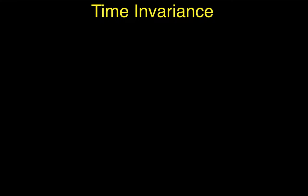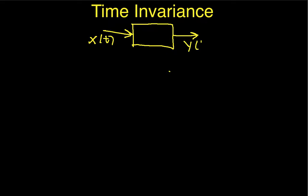Suppose I have a system with an input and an output. All this system does is multiply its input by two to get its output — it's just a constant gain, and we're going to assume that this gain is indeed constant and never changes. We're going to do a thought experiment where we put a signal into the system, get the signal out, then put the signal in after a delay and get the signal out, and see if the output to the delayed input equals the delayed output of the non-delayed input.